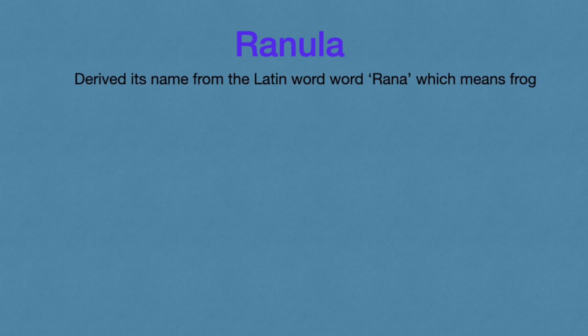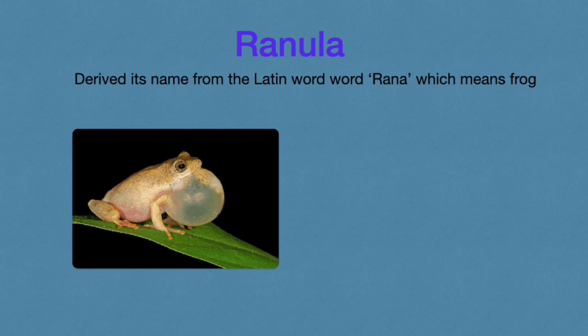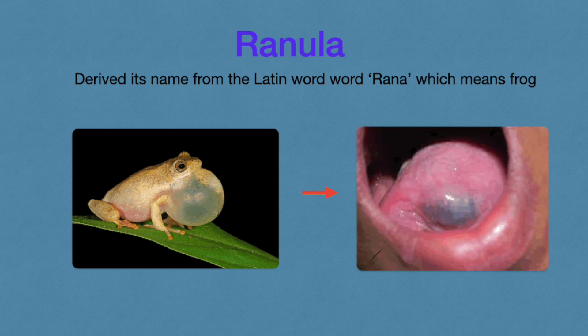Today we will study about ranula. Ranula derives its name from the Latin word 'rana,' meaning frog. It is named after rana because the morphological appearance of the lesion resembles sublingual blebs in a frog's mouth. The physical appearance of both resembles each other, which is why ranula was given its name after the Latin word rana.